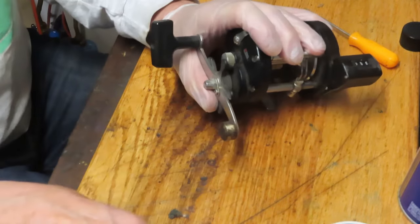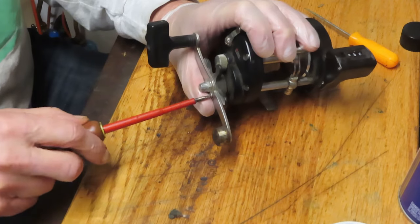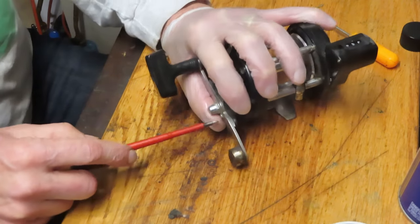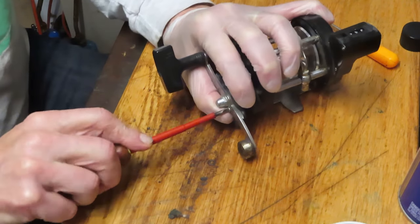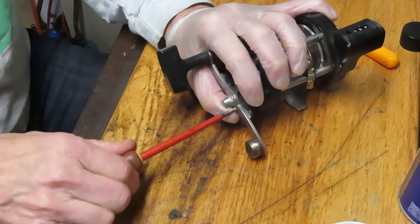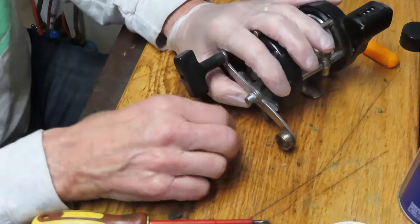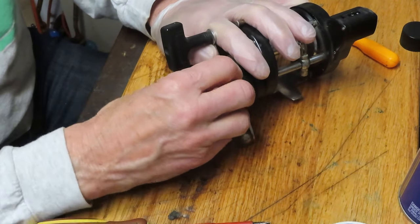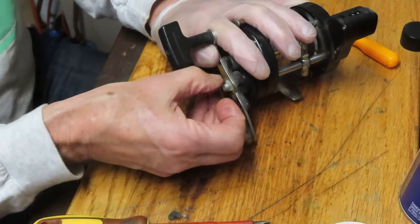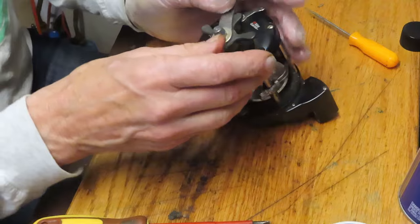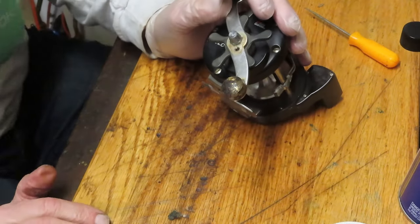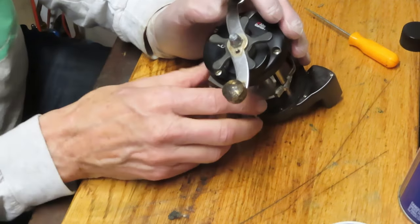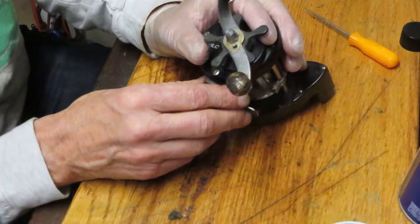So this could still serve part of that function. But we're going to take this reel apart because I'm curious about the design here. This looks very much like the old Shakespeare Tidewater reels, but Shakespeare and Abu Garcia were competitors. That's part of the fun of servicing all kinds of reels. We're going to remove the exterior pieces and parts. As I do, I want to encourage you to subscribe to my channel.